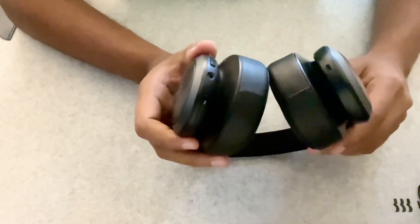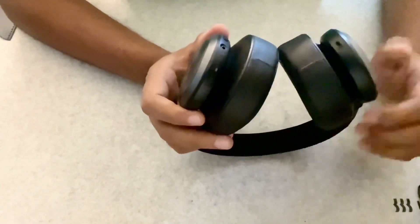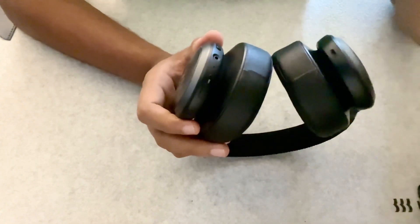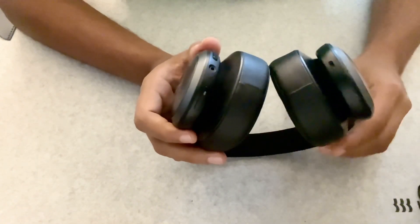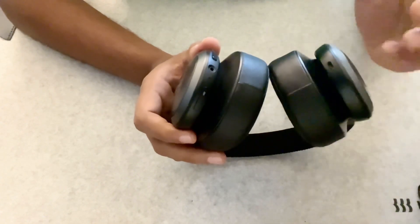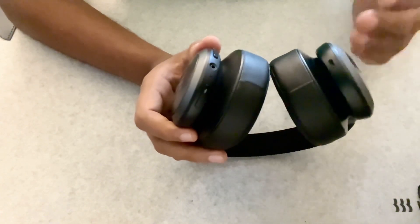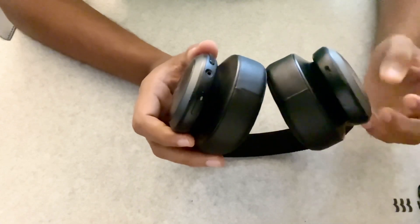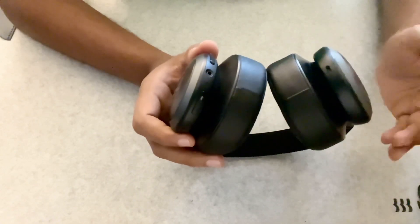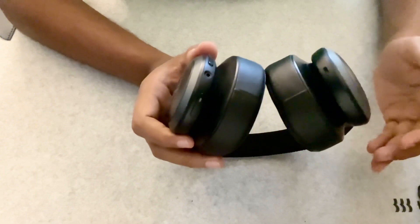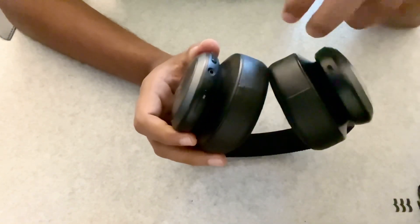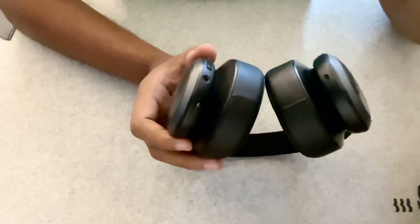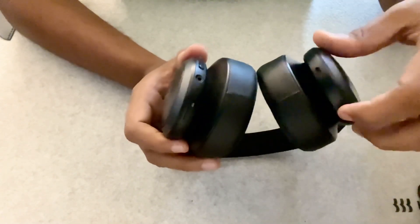So these headphones come with three different modes. In the first mode, by default it's noise cancellation, which is complete noise cancellation, and that just helps you to listen to what you're listening on these headphones. The second is ambient mode, which means it reduces the noise cancellation to 50% so that you can enjoy listening to your music as well as pay attention to what's going on in the environment.